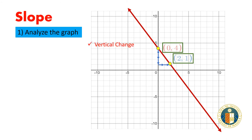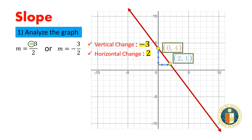So, the vertical change would be negative 3, and the horizontal change would be 2. Using this information, we recognize that the ratio of the vertical change to the horizontal change would be negative 3 to 2, or negative 3 over 2. We could move the negative sign in front of the fraction, and it doesn't matter whether the negative sign is in the numerator, denominator, or in front of the fraction.